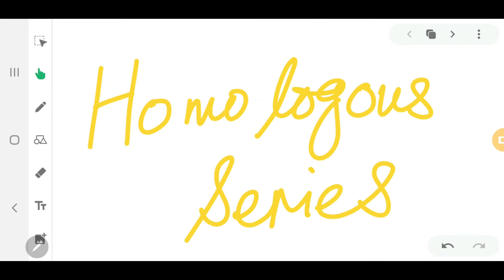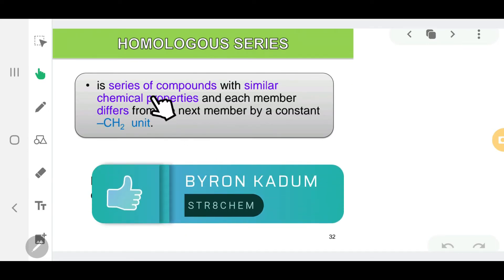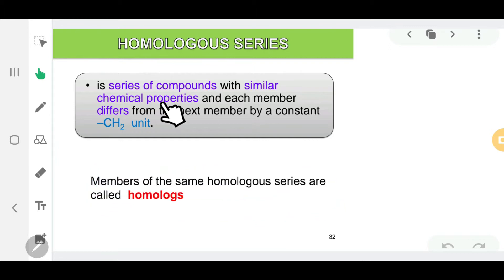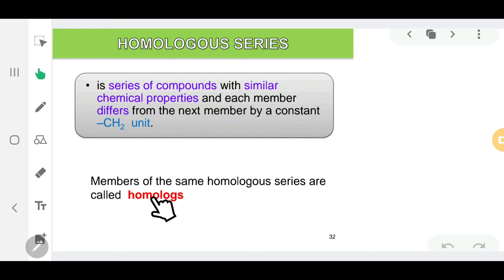Hello everyone. In this video we look at homologous series. Homologous series is defined as the series of compounds with similar chemical properties, and each member differs from the next member by a constant CH2 unit. The members of the same homologous series we call them the homologues.